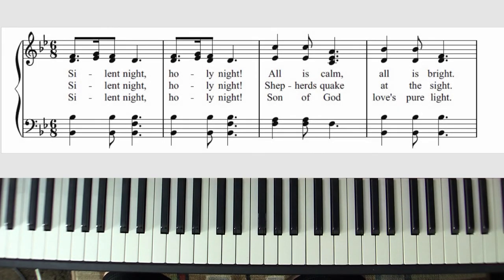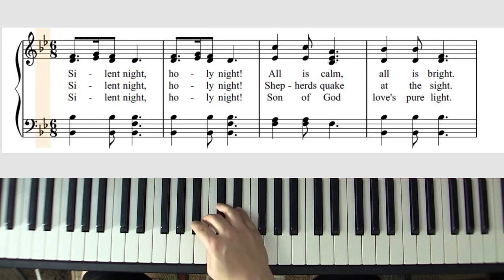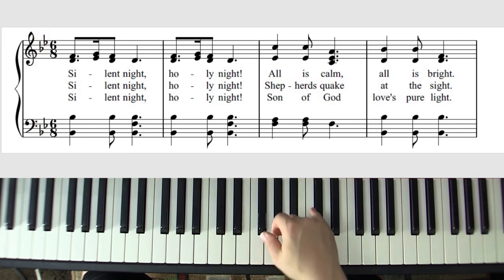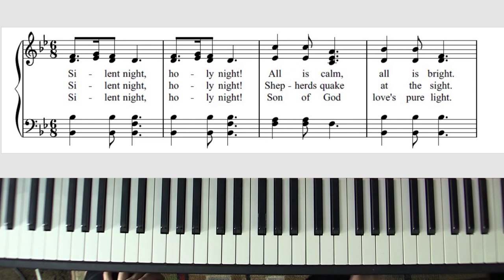Welcome to Visionaries 12 Days of Christmas piano songs. We're going to do Silent Night this time. If you look, it's in the key of B-flat, so we have B-flat, C, D, E-flat, F, G, A, B-flat for all the notes we're doing. It's also in 6/8 time signature.